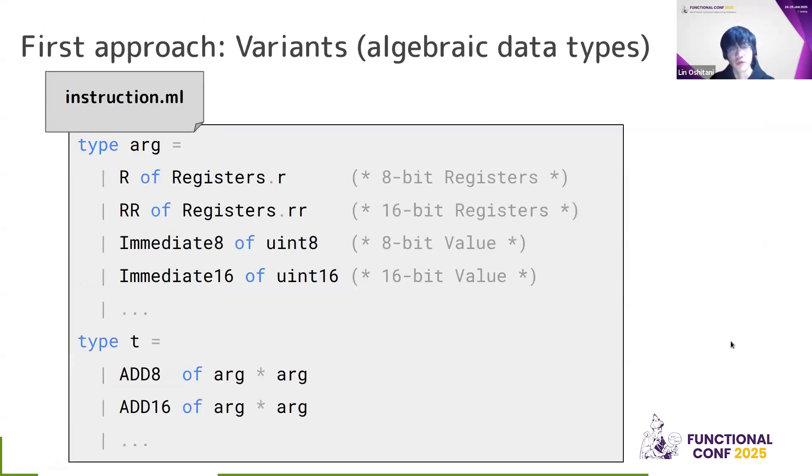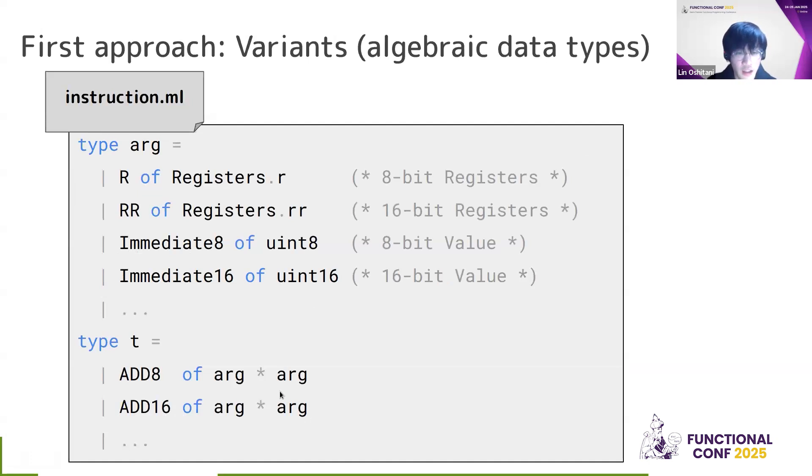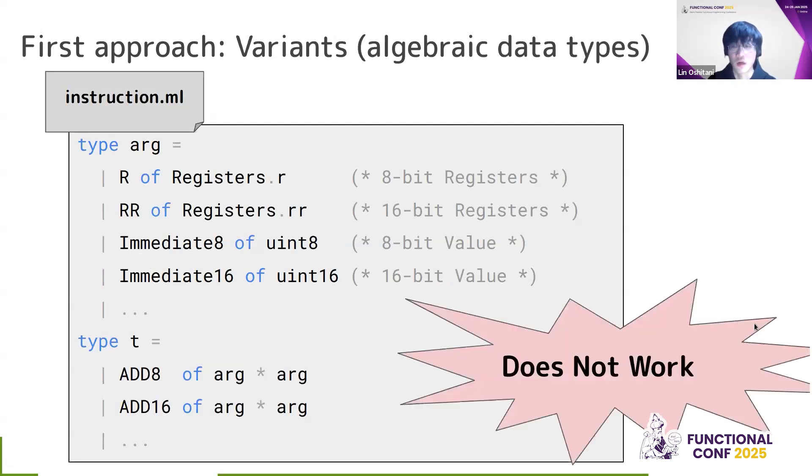How should we go about defining this instruction set? So this was my first approach of the implementation. In the instruction.ml, I define the instruction set here. So this is the type of the instruction set in variants. And now I have add8 and add16, so both 8-bit variant and 16-bit variant of that function. And both of these functions will take two arguments. And each of the arguments, it can be an 8-bit register, it can be a 16-bit register, it can be an 8-bit value, or it can be a 16-bit value, and so on. Now this all seems nice, but actually, this does not work.